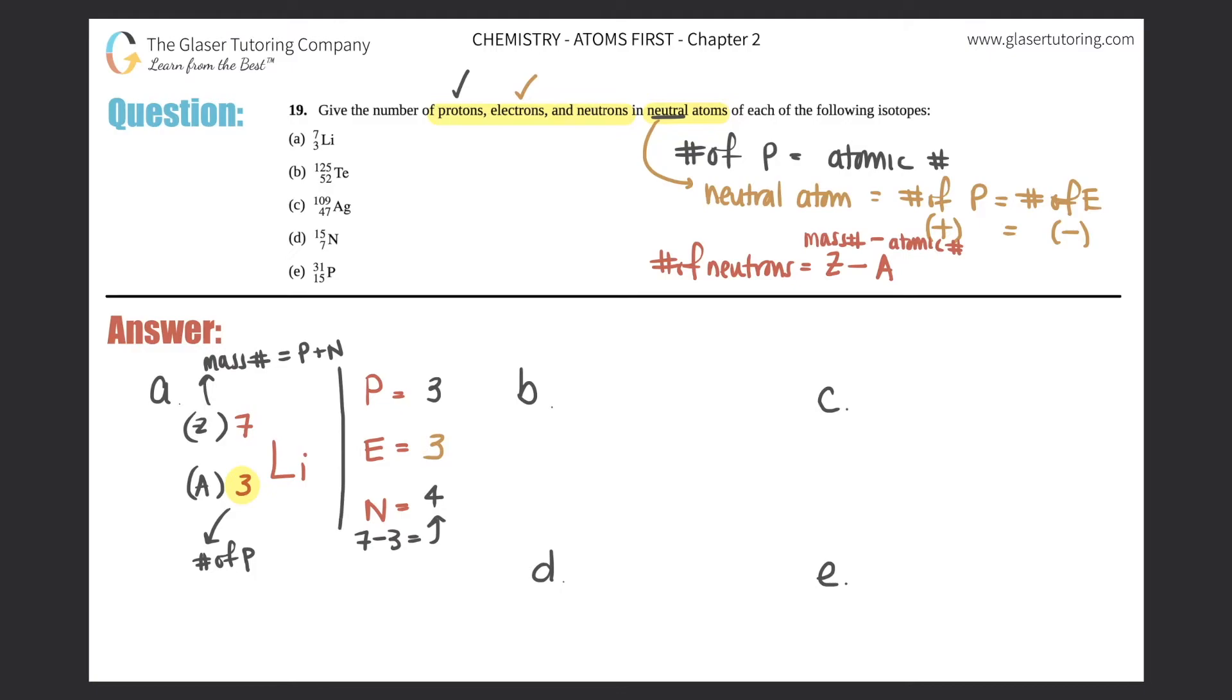If you do your subtraction and you get a negative number, go back for neutrons. You'll never have a negative number for neutrons. So it's always the larger number minus the smaller number. So for A, you have three protons, three electrons, and four neutrons. Box that answer off. We're moving on to the next one.